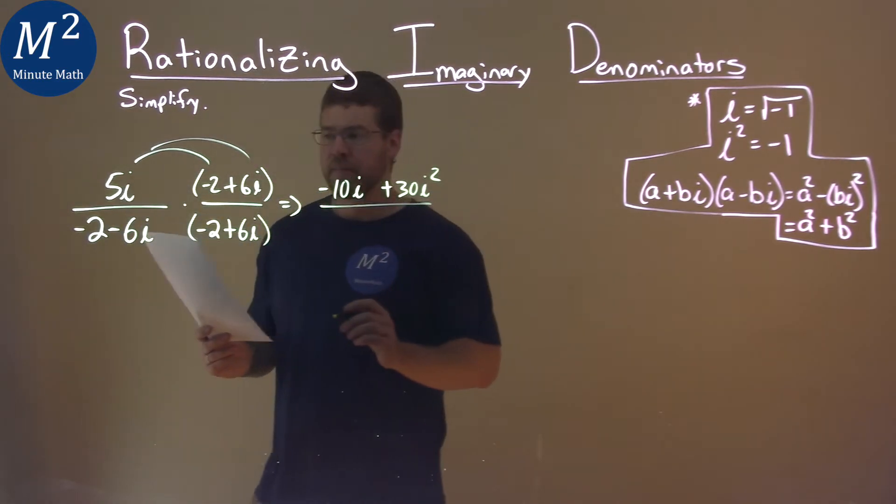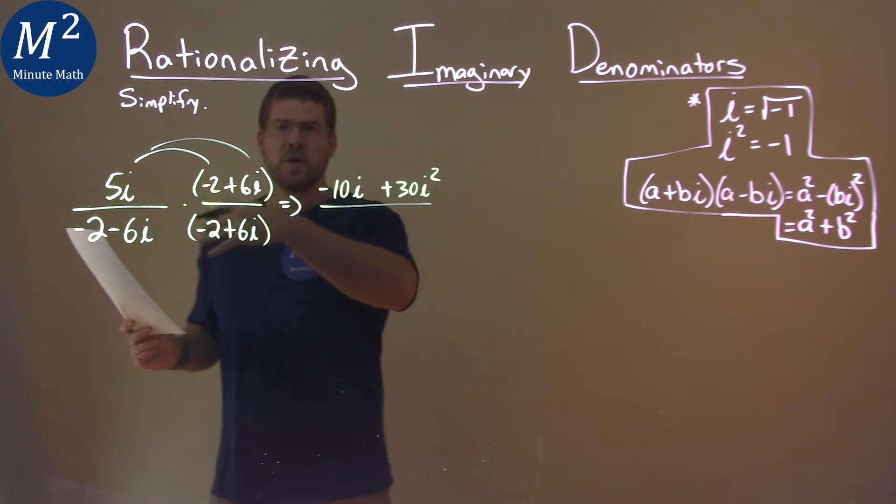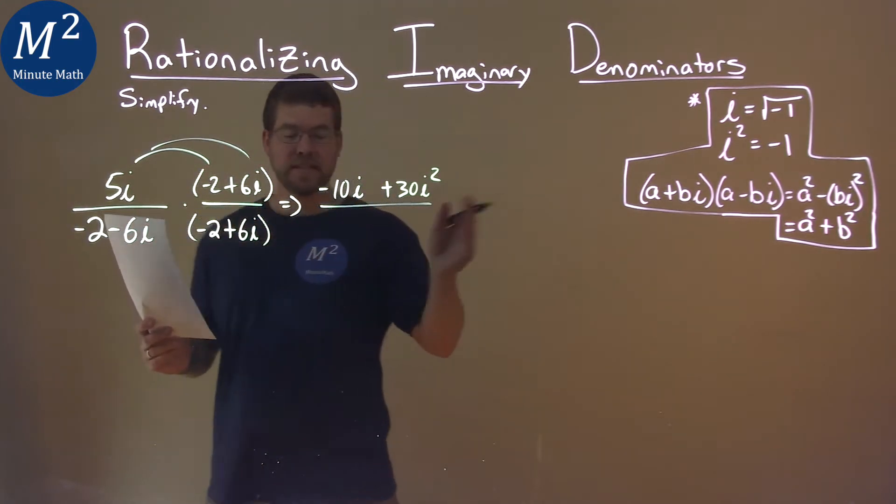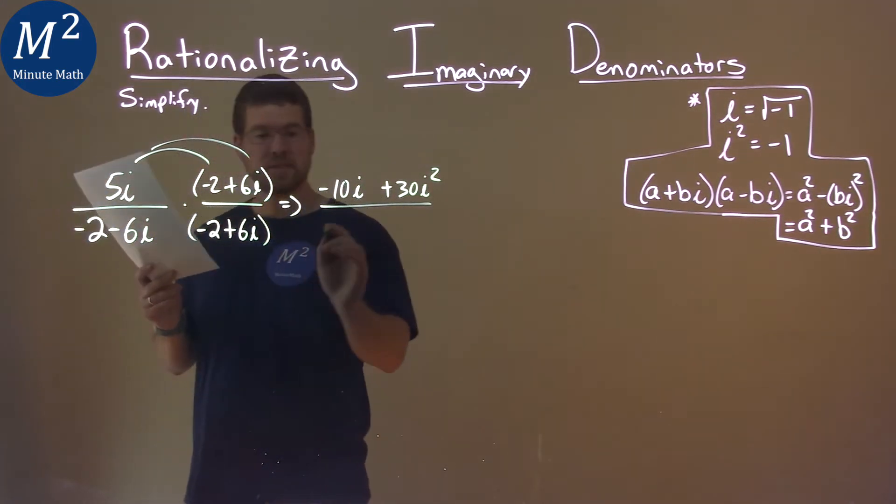But what about the denominator? The beauty of multiplying by a conjugate, we can see, is we take our a value, it's negative 2, and we're going to square it.